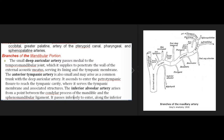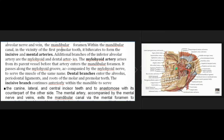The small deep auricular artery supplies the temporomandibular joint and the lining of the external acoustic meatus and tympanic membrane. The anterior tympanic artery ascends to enter the petrotympanic fissure, reaching the tympanic cavity and serving the tympanic membrane and associated structures. The inferior alveolar artery arises between the condylar process and the sphenomandibular ligament, passes inferiorly to enter the mandibular foramen along the inferior alveolar nerve and vein, and within the mandibular canal bifurcates to form the incisive and mental arteries. Additional branches include the mylohyoid and dental arteries.